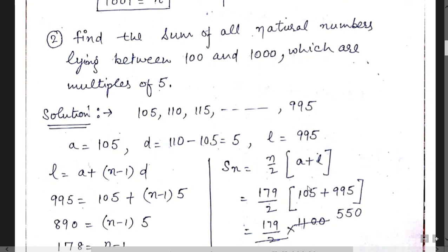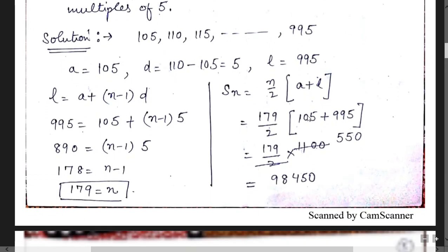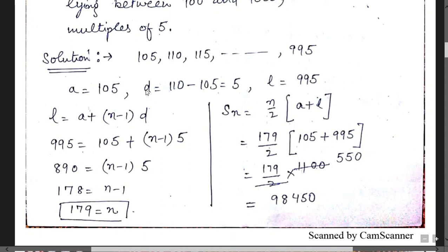In the second question, the word 'between' means 100 and 1000 are excluded. We have to find the sum of all natural numbers between 100 and 1000 which are multiples of 5. So we exclude 100 and 1000 and write numbers between them divisible by 5. The first number is 105, then 110, up to 995. So a equals 105, d equals 110 minus 105 equals 5, and l equals 995.